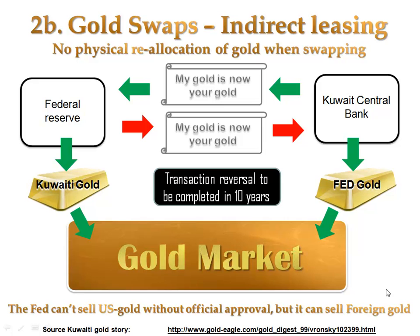What's the point in swapping gold and then short selling it to the market? As we have seen, the Federal Reserve is not allowed to sell or lease the nation's gold to the market on its own behalf. But under US laws, nothing is said about the sale of other nations' gold reserves. So when the Federal Reserve swaps gold reserves with the central bank of Kuwait, for example, it can sell Kuwaiti gold to the market without its balance sheet showing any decline of its own gold reserves.